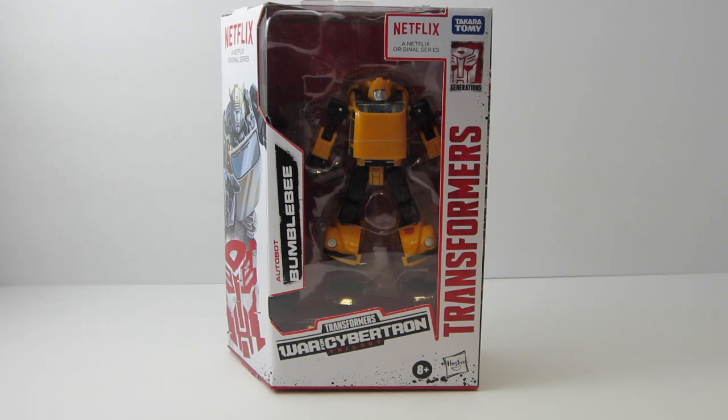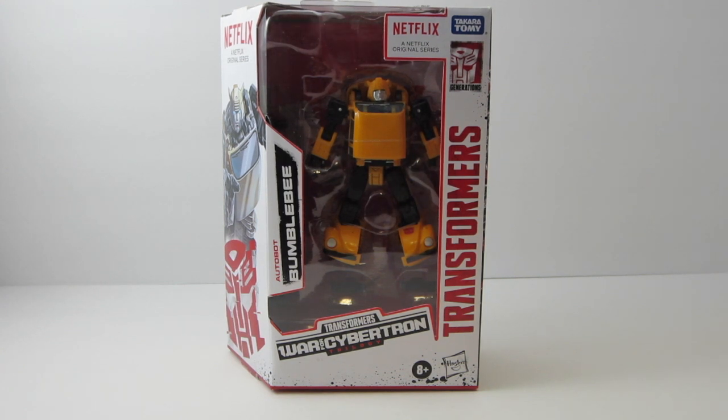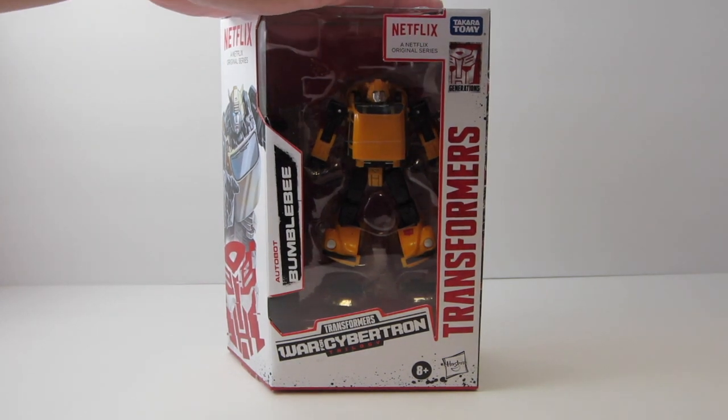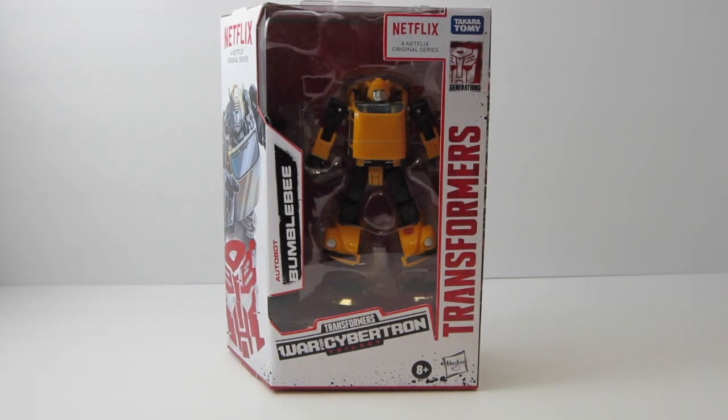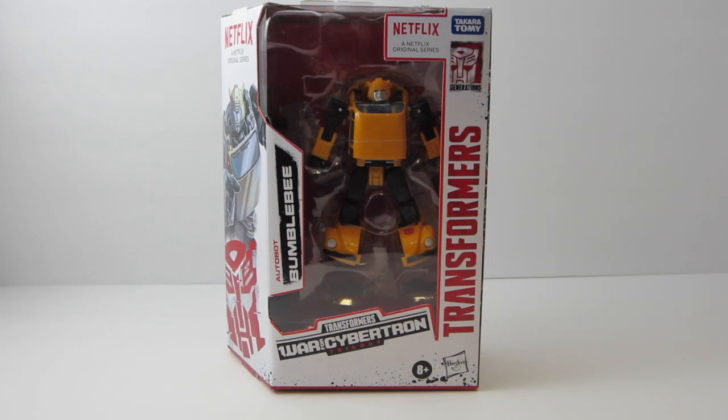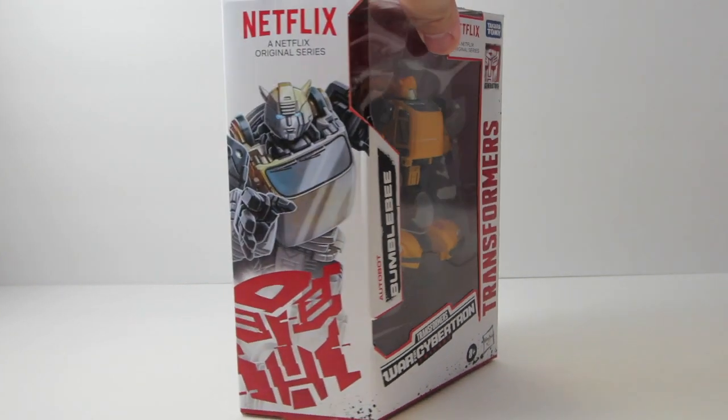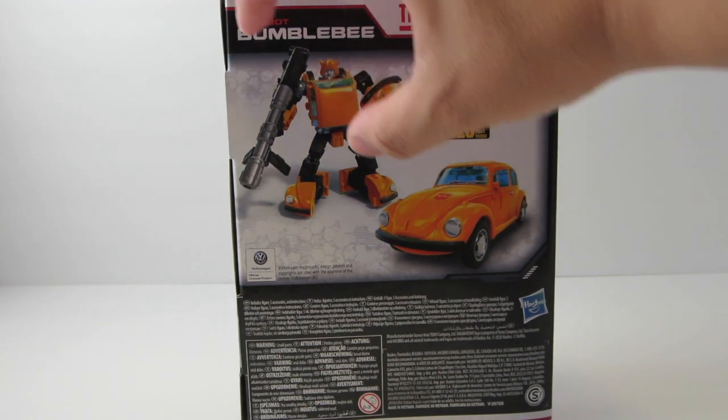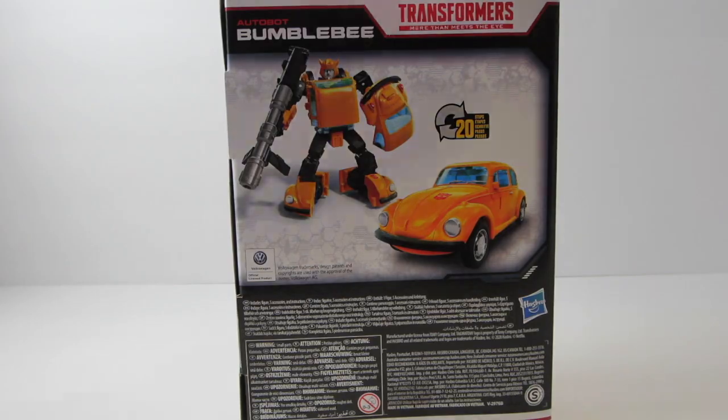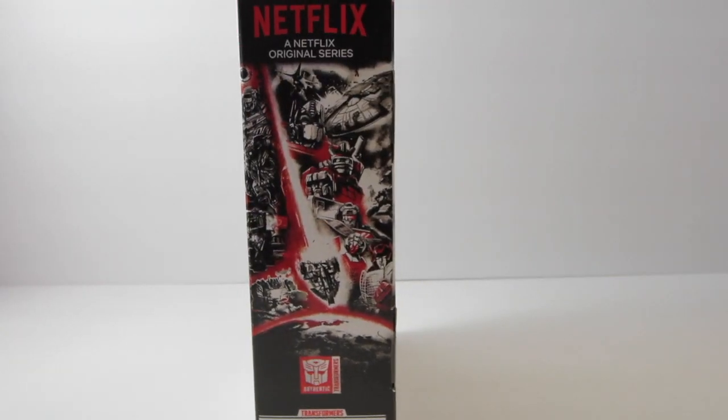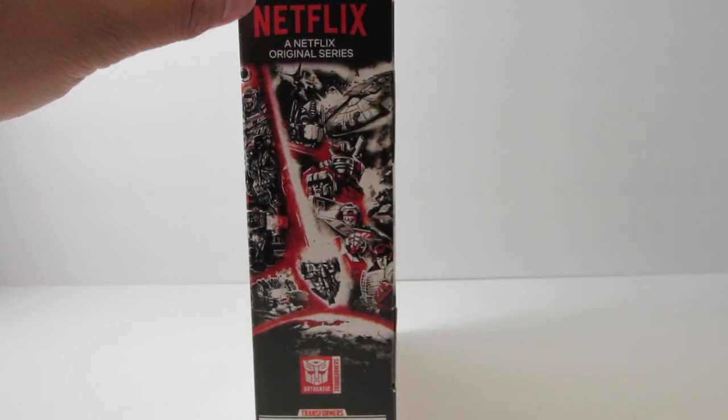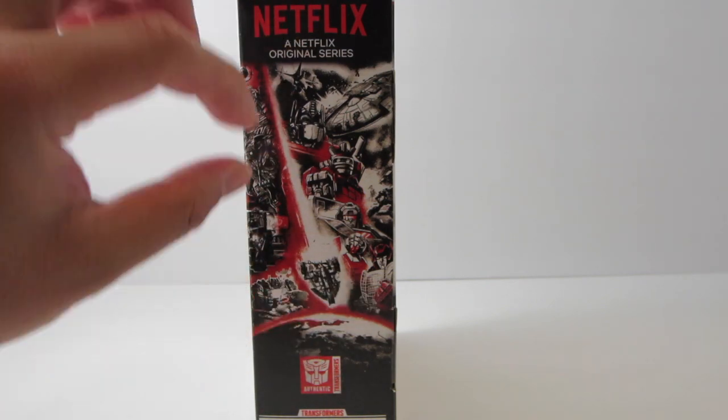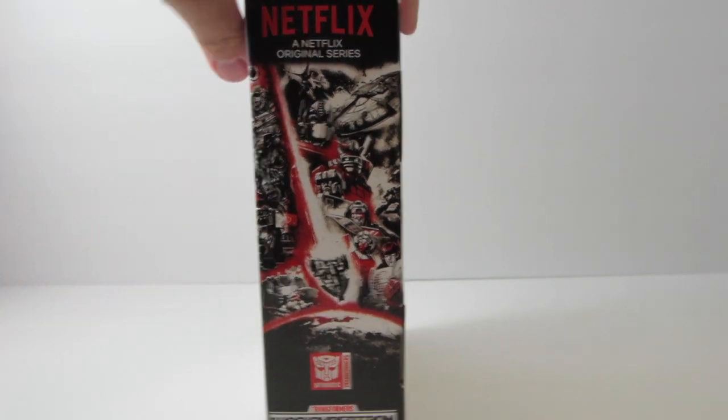This is Bumblebee right here. I had him in December, I'm just now getting to the review. He's still in the box. We got Bumblebee right here, we got the 3D image of him right here in vehicle mode. We also have the Earthrise promotional picture right here with the Netflix right on top.